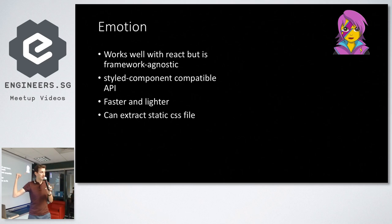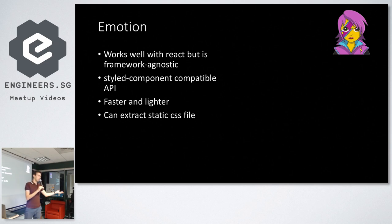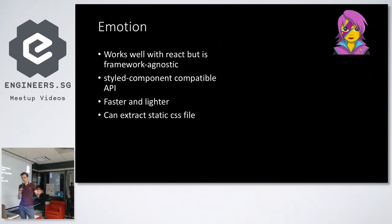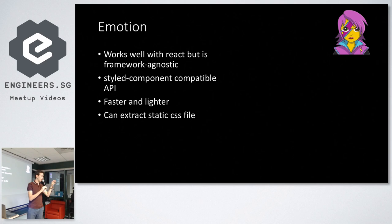The third library is Emotion — it wins the best logo award. Its API is basically the same as styled-components, but it also has APIs compatible with the JSON format if you prefer that. It's been gaining more traction recently because it's much smaller when minified and much faster in processing than styled-components. It can also generate a static file from all your styles across the app, which is great for caching.